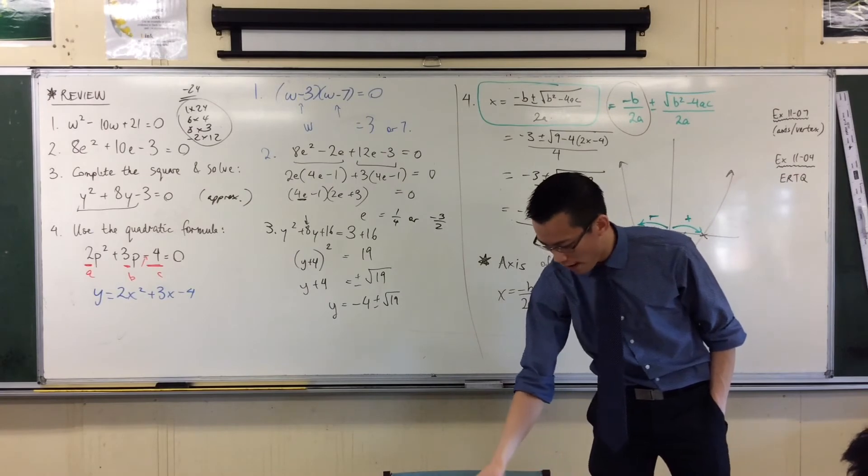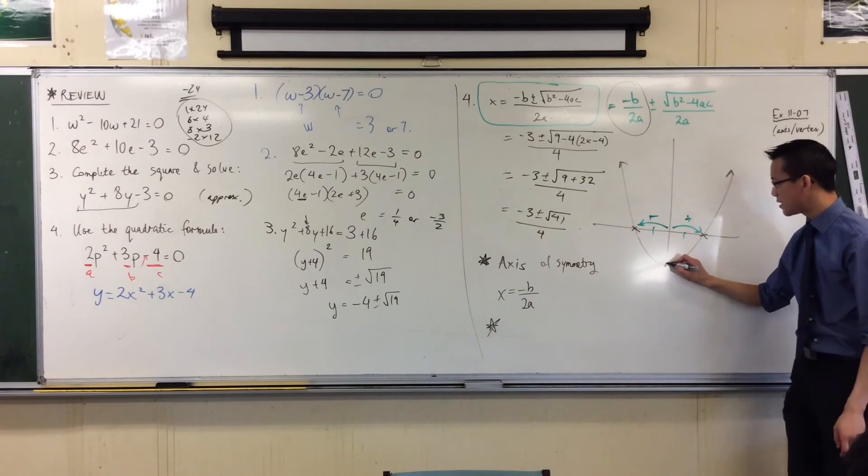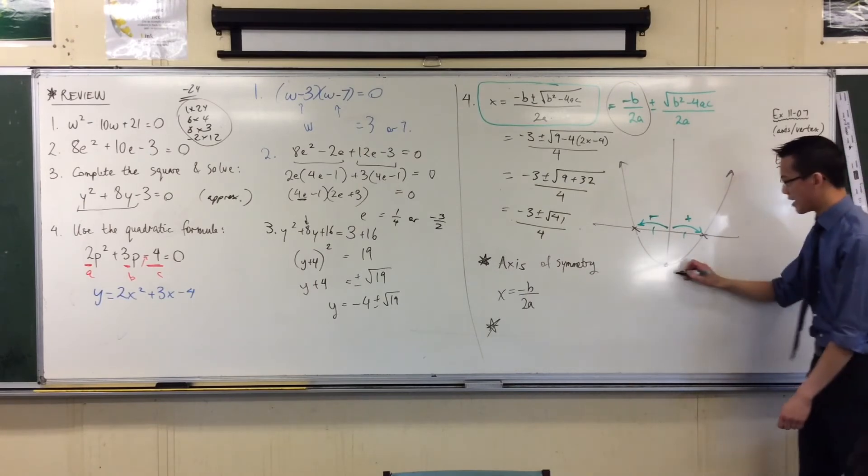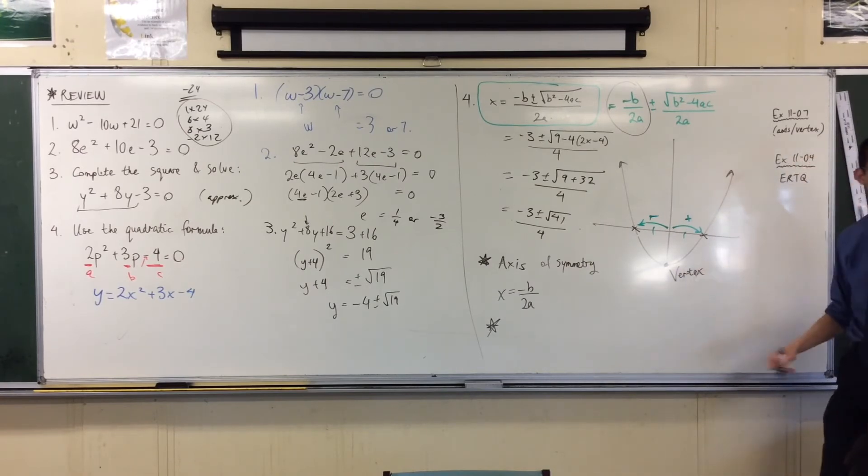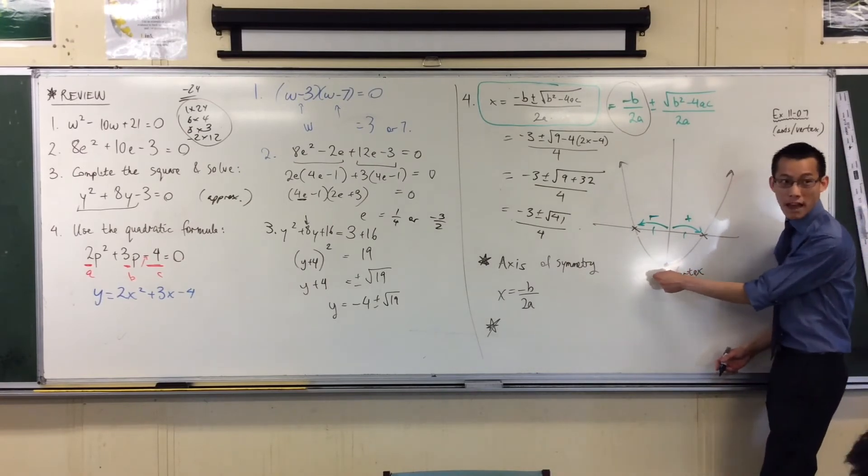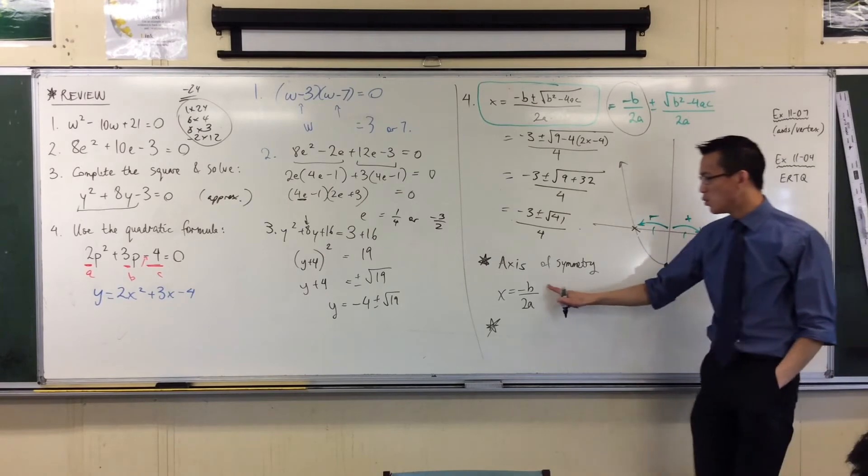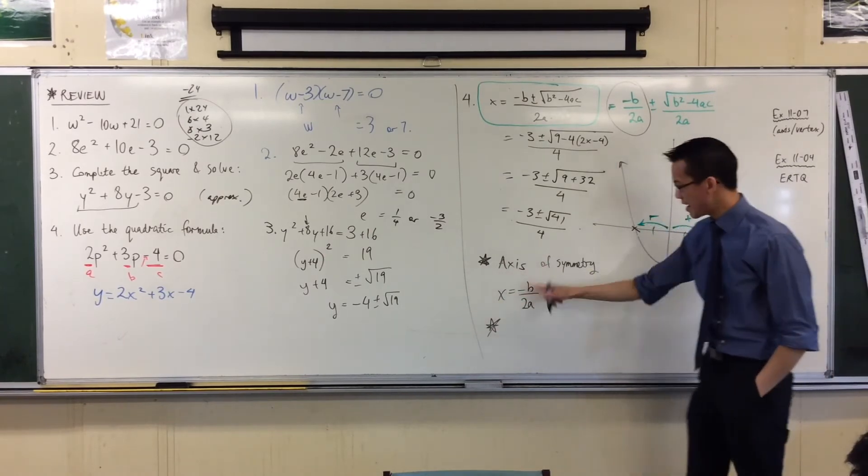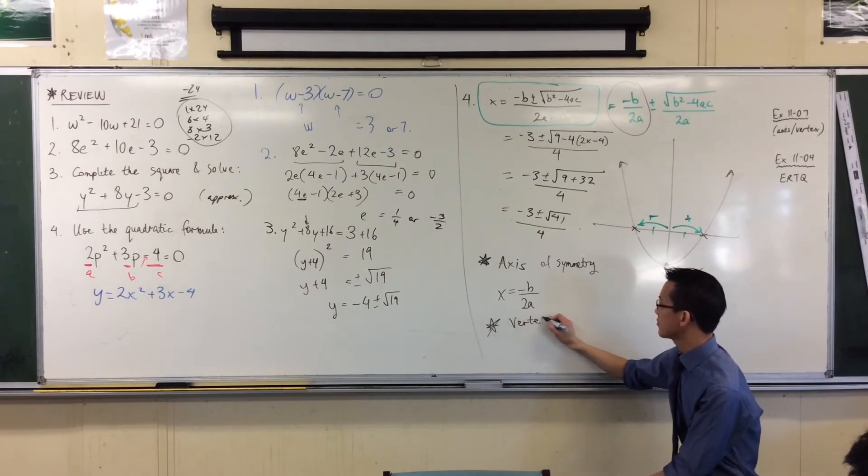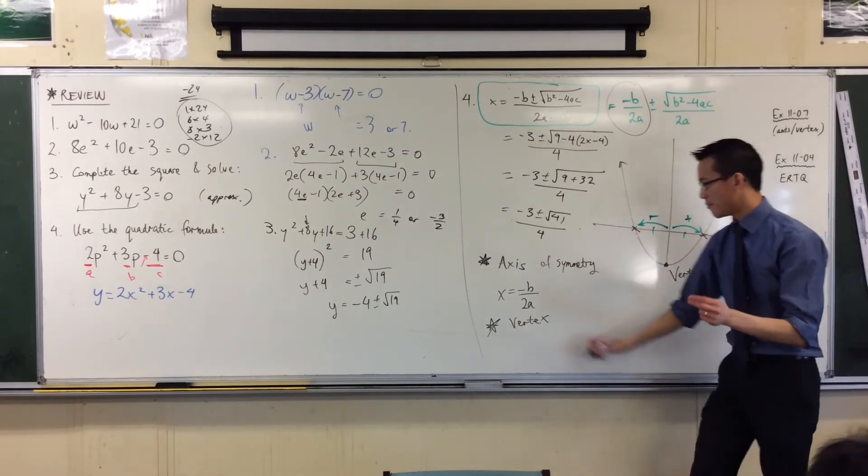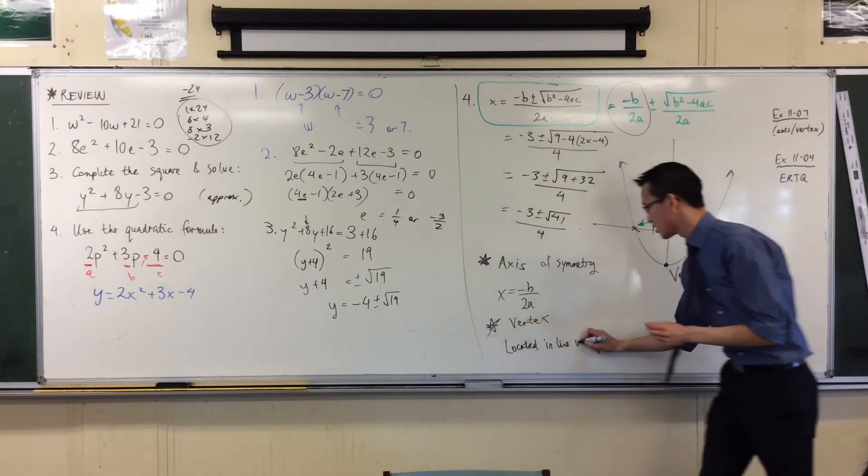But the other thing you can find with the axis of symmetry is this point down here. This is a really important point to the graph. It starts with the v's. The vertex. Very good. You can think of it either as the bottom of the graph, or if the graph's upside down, if the parabola's upside down, it'd be the top. So the vertex is going to line up with this. It's going to be in line with that axis of symmetry. So the vertex is located at, in line with, the axis of symmetry.